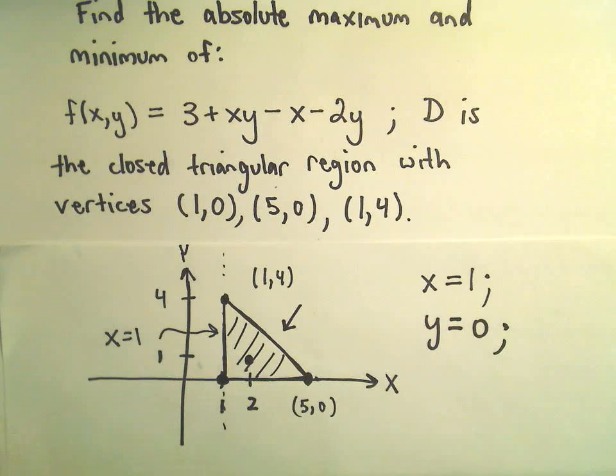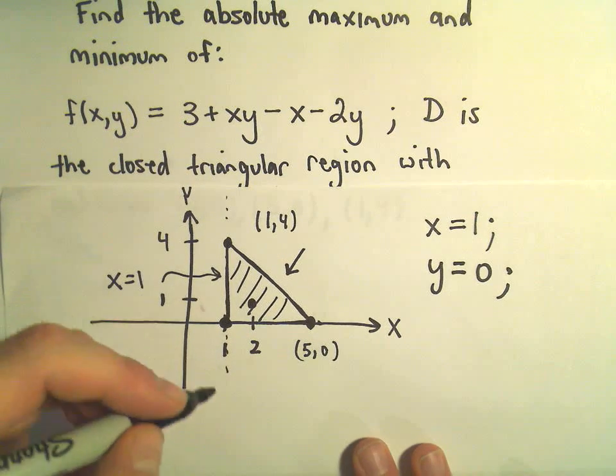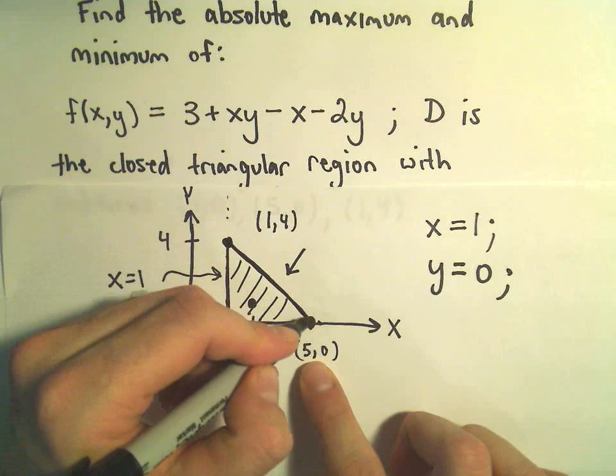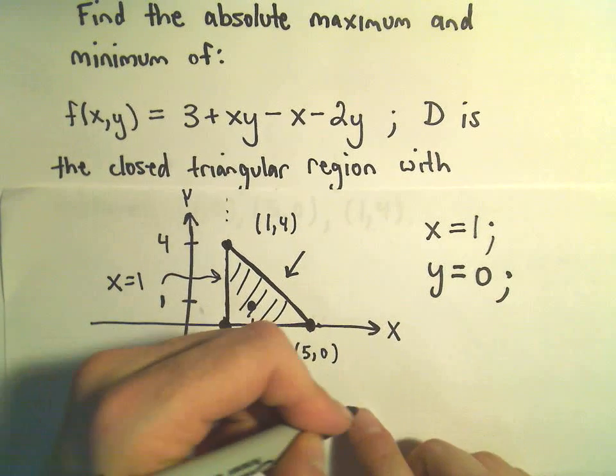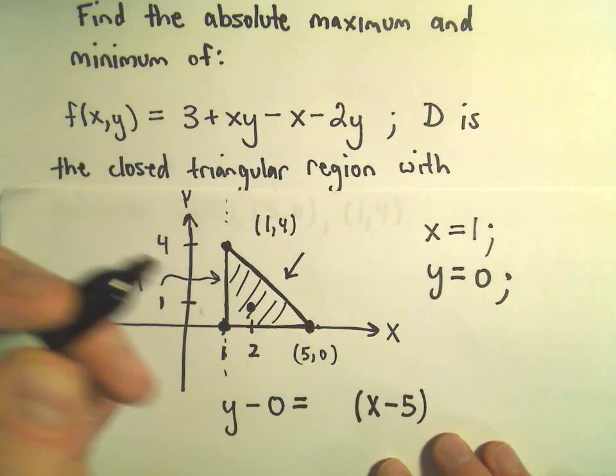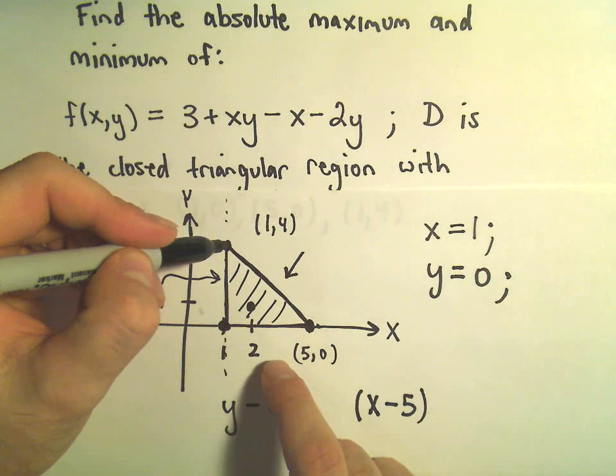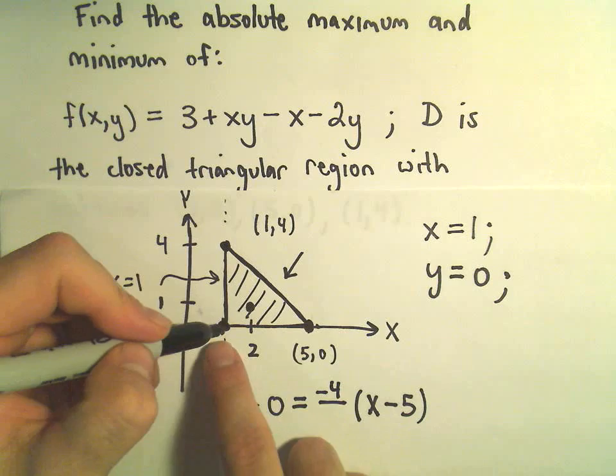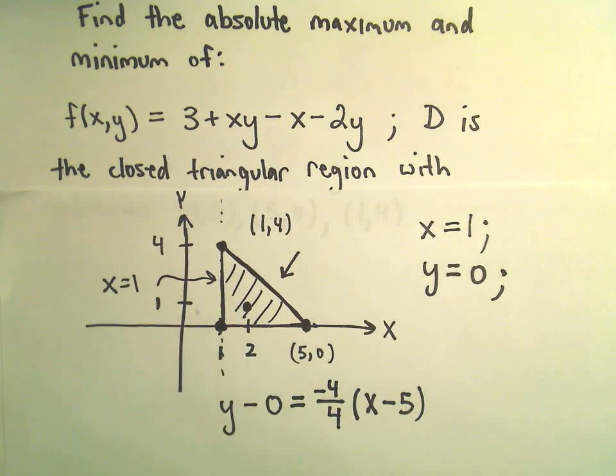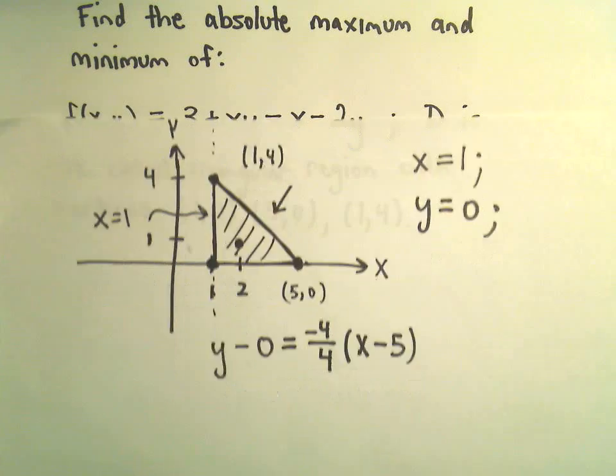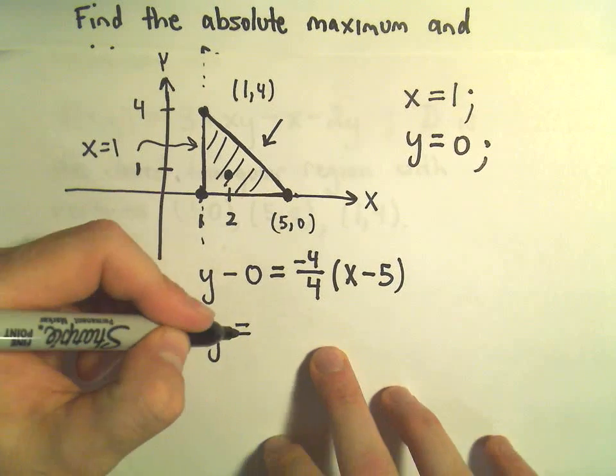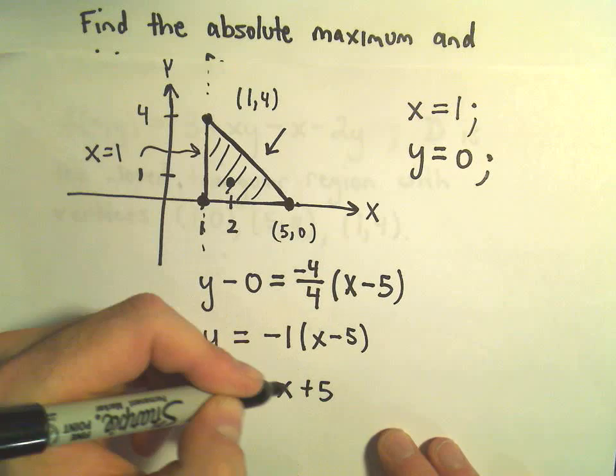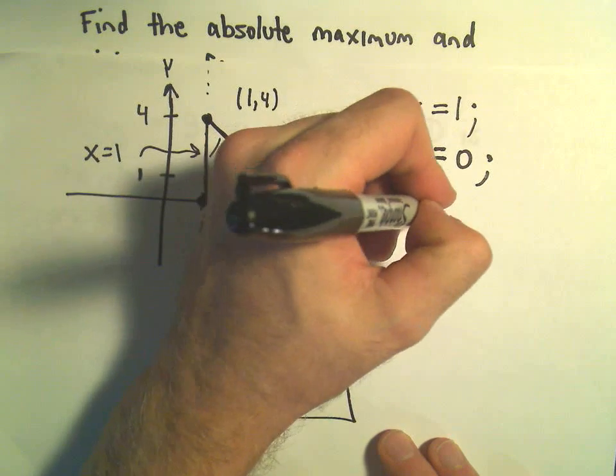We also have to find an equation for this line. I'm just going to use point slope form. So if we take y minus 0, we'll figure out the slope. The slope, if we go from (1,4) to (5,0), we would go down by 4, so change in y is negative 4, and then if we go from 1 to 5, that'll be a change in x equal to 4. So we're simply going to get the equation y equals negative 1 times (x minus 5), or equivalently y equals negative x plus 5.